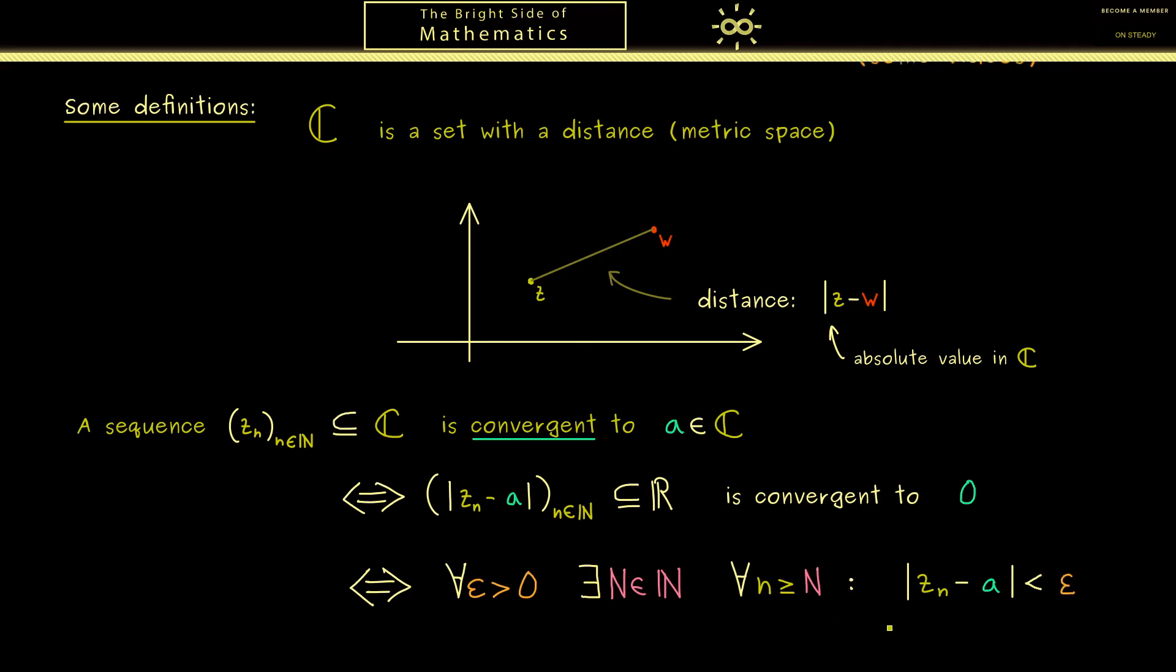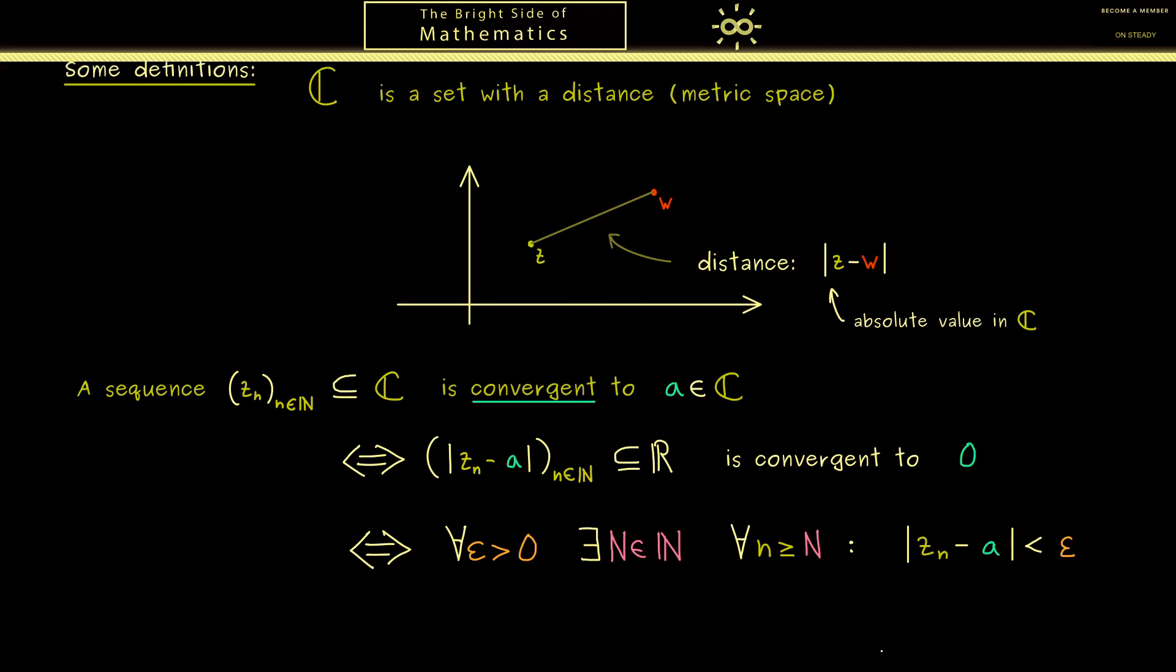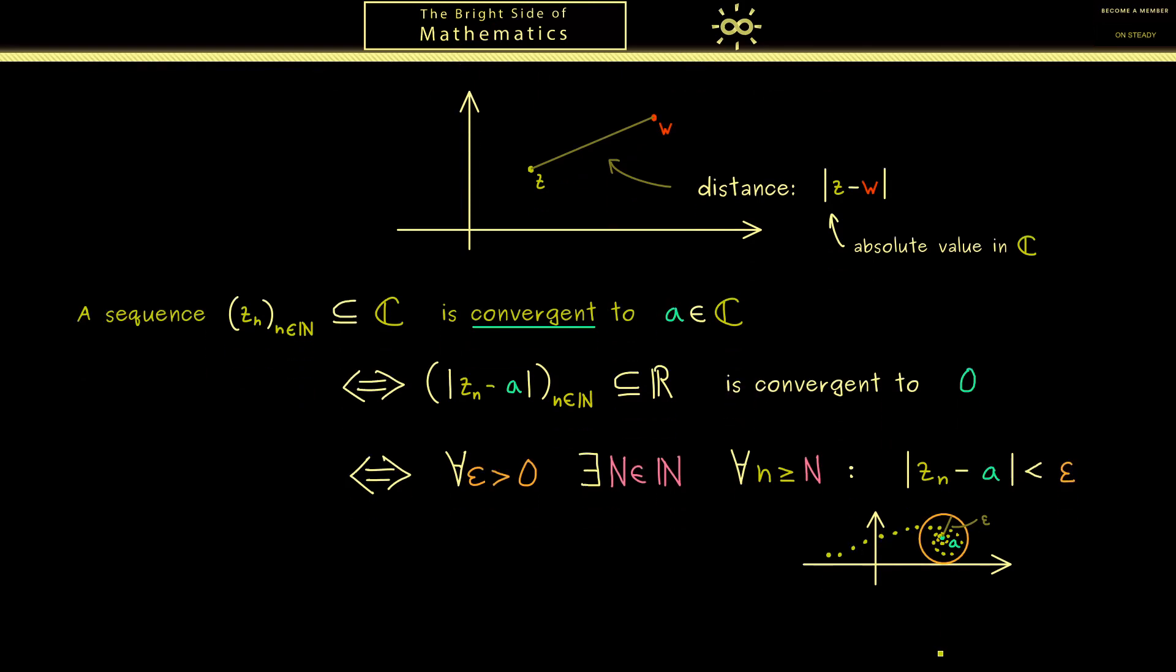So you see this is exactly the definition we learned in real analysis. However now we can visualize it in the complex plane. Now this formula with the distance less than epsilon means that we can draw a circle around a with radius epsilon. With this we get that eventually the sequence members z_n lie inside this circle. So only finitely many can lie outside.